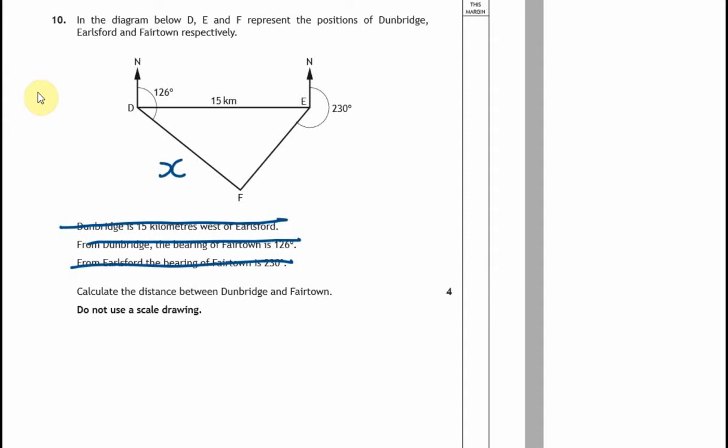The only thing when you see bearings, the only thing you really need to remember is first of all compass points can be quite handy. So never eat shredded wheat, that is just to remember north, east, south, west. And this is 90 degrees, everything is 90 degrees, everything is perpendicular to each other.